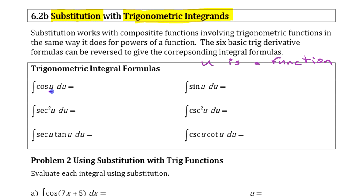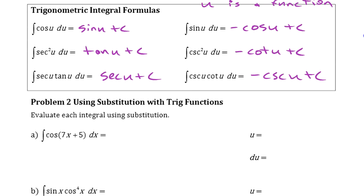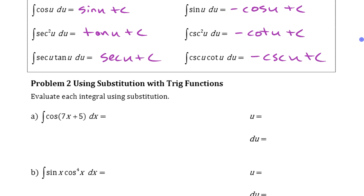If you've already changed this to DU, then you don't have to worry about it. Once you've done that substitution, this is just sine of U, this is just minus cosine of U, this is just tangent of U, this is just minus cotangent of U. This is secant of U, and this is minus cosecant of U. So we're going to put those to work here with our substitution strategy.